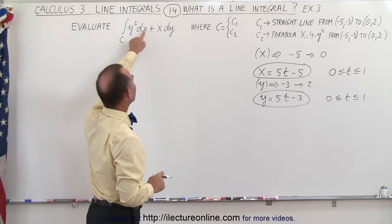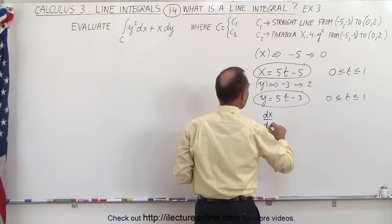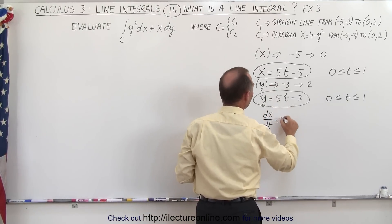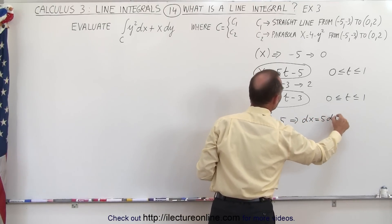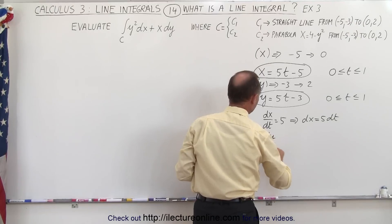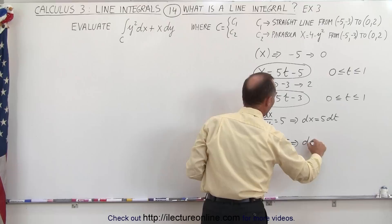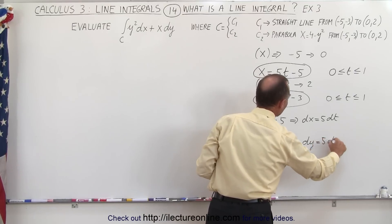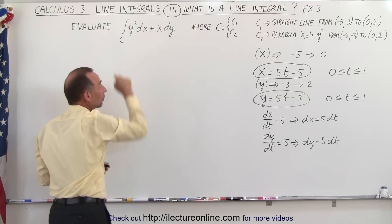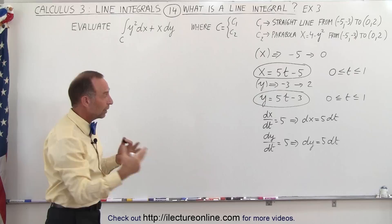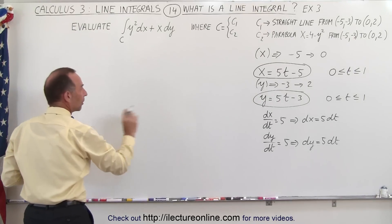I also want to find a dx and a dy, so I can say that dx dt is going to be equal to 5, which means that dx is equal to 5 times dt, and dy dt can also be written to be equal to 5, so therefore my dy can be replaced by 5 dt. So now we can see that this integral right here can be converted to an integral I can actually integrate using a parametric conversion.